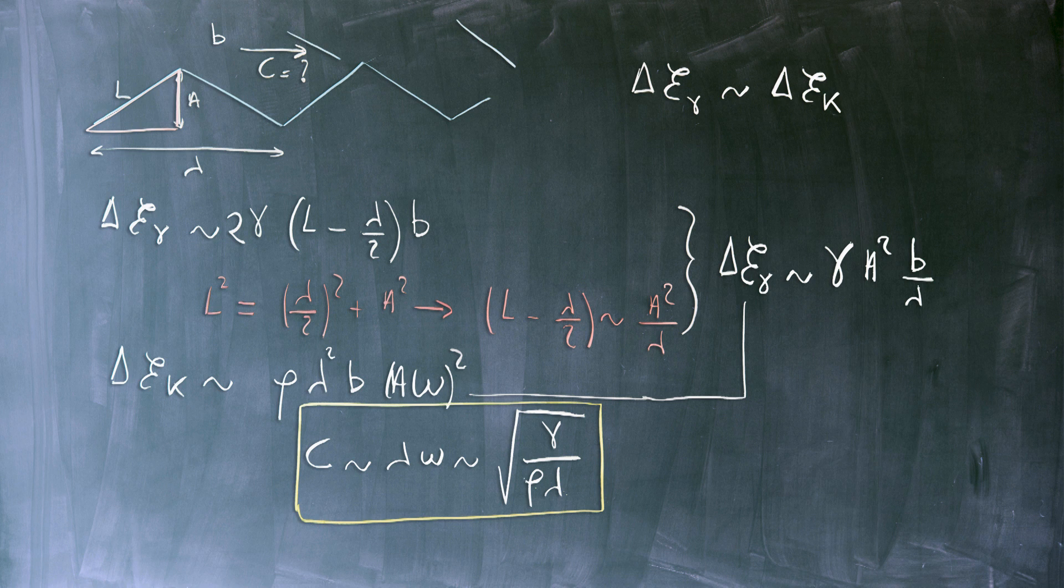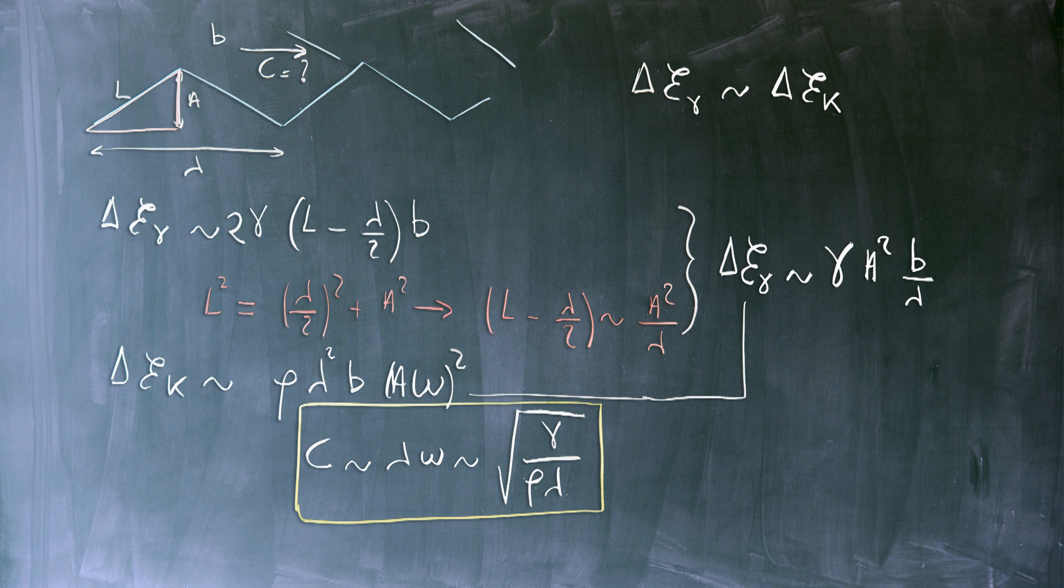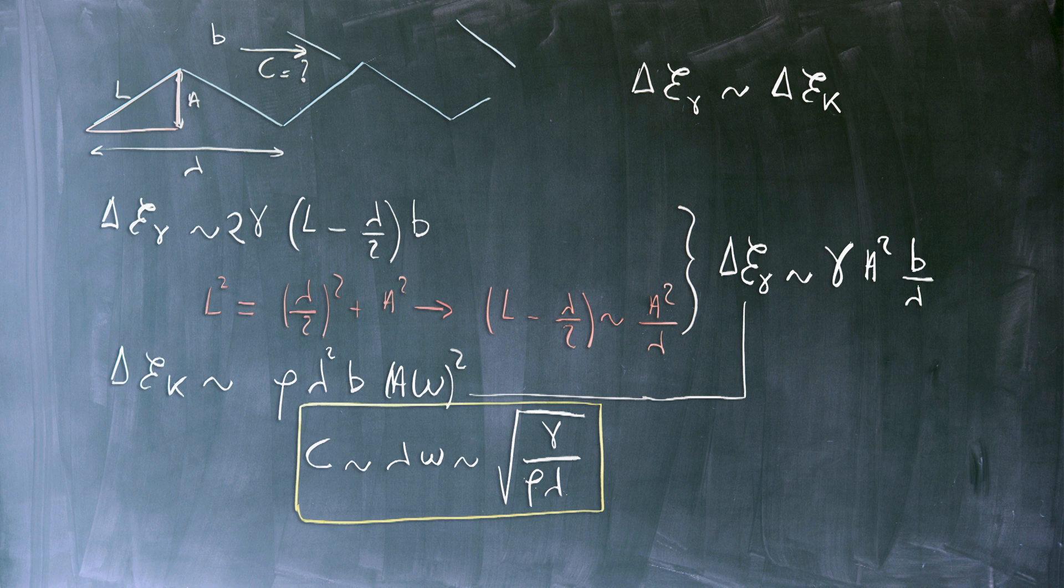So the velocity of those waves goes like square root of surface tension divided by density times wavelength. And with this result, we can understand the first property that we have underlined, that is that when the velocity increases, when we move far from the center of the rotating tank, the wavelengths that can sustain this velocity are smaller and smaller. So as u increases, lambda decreases.